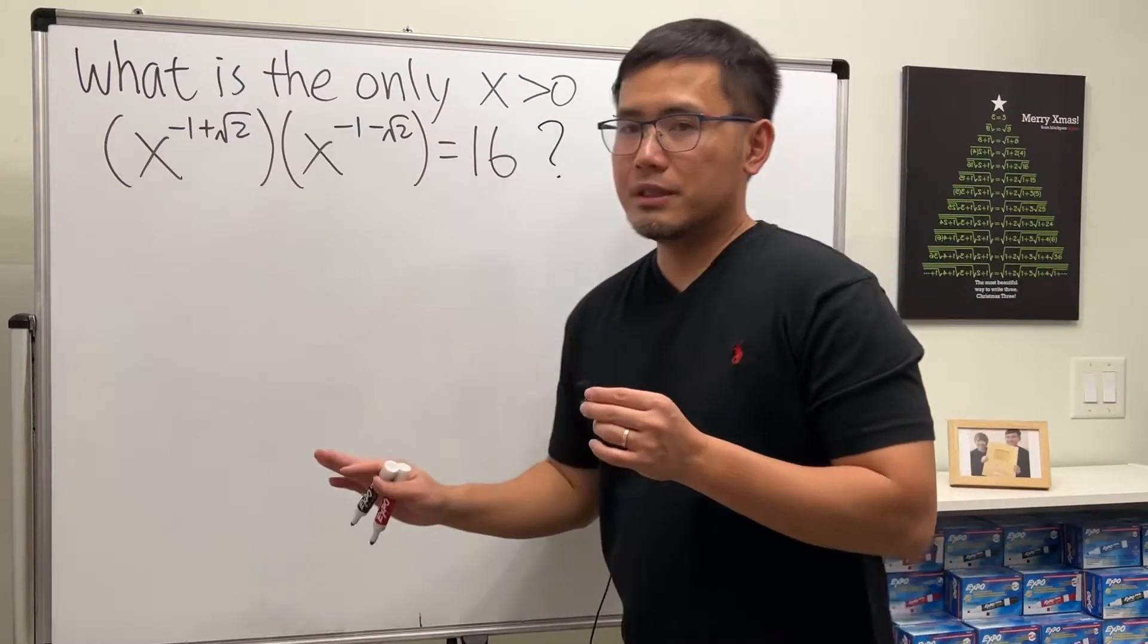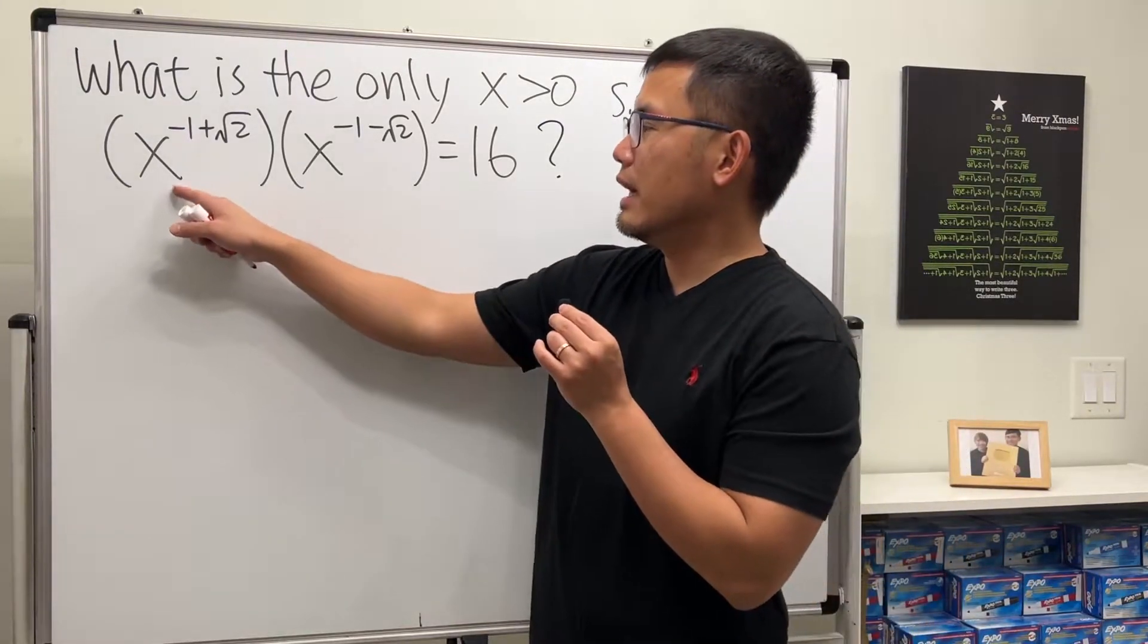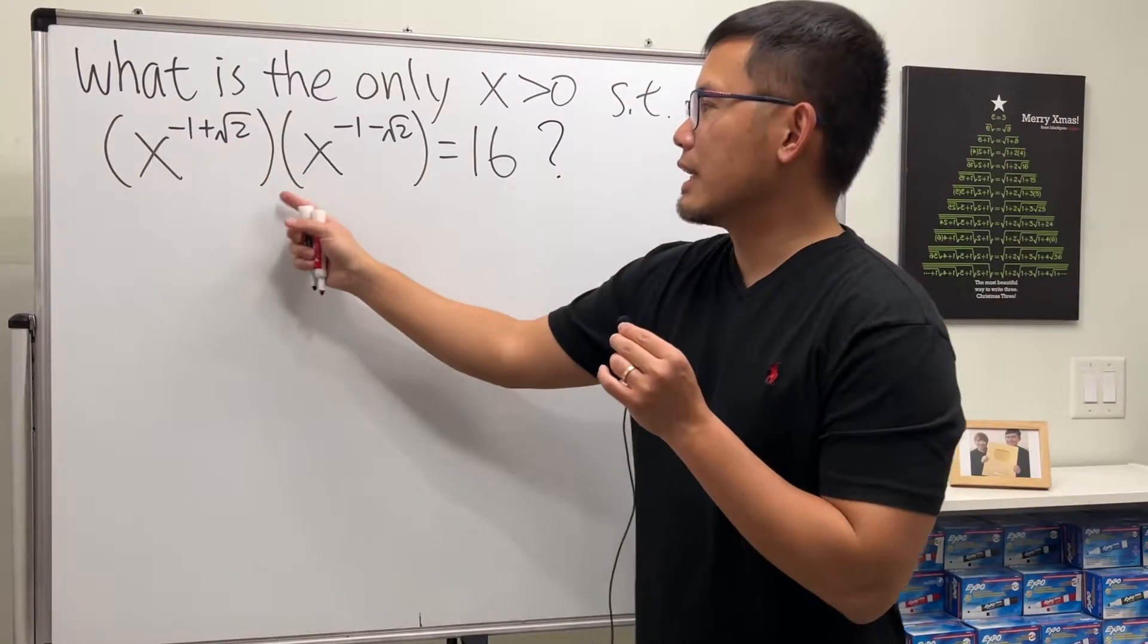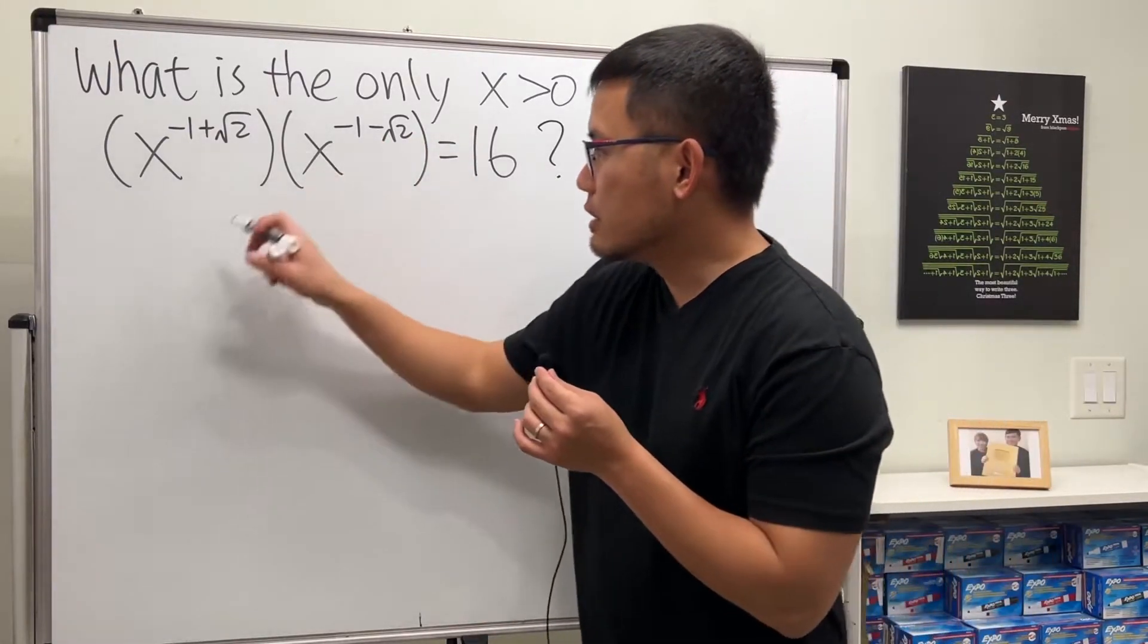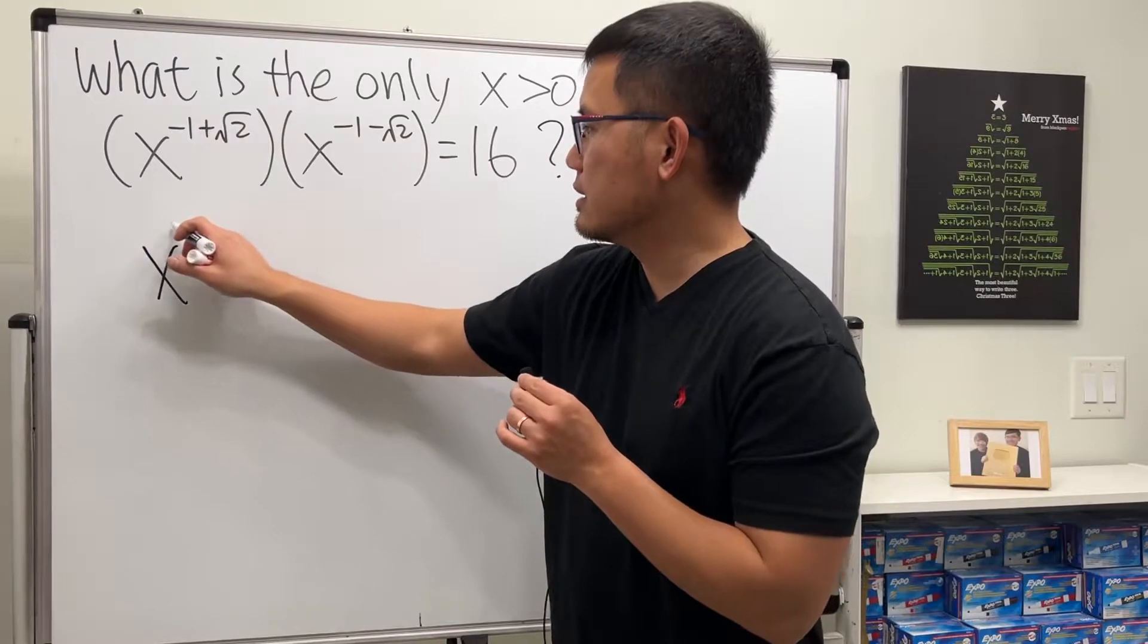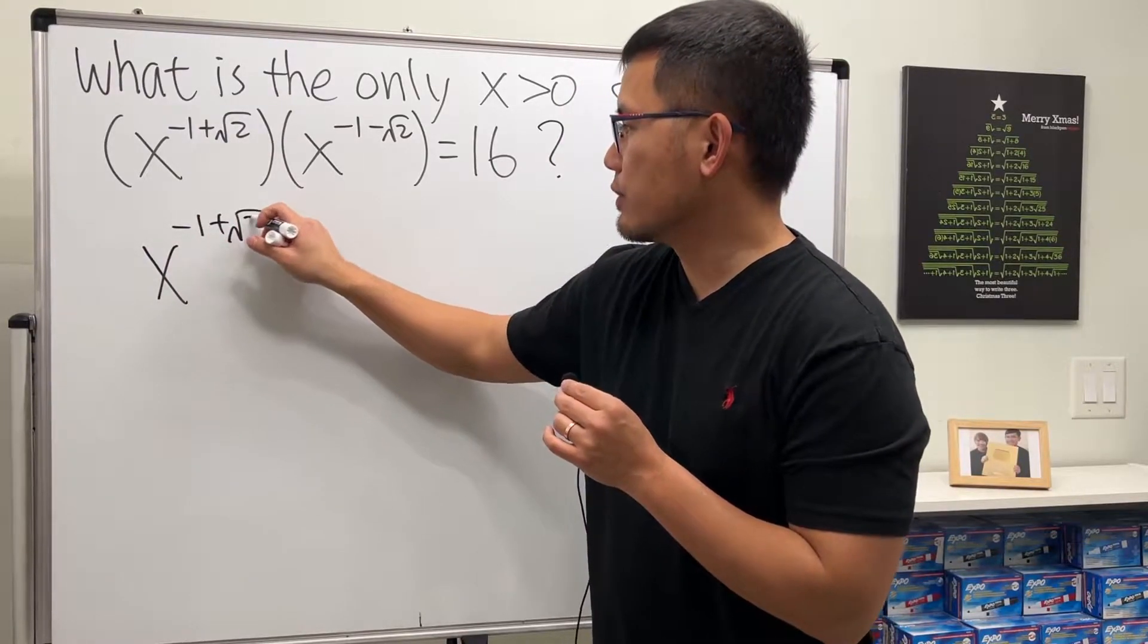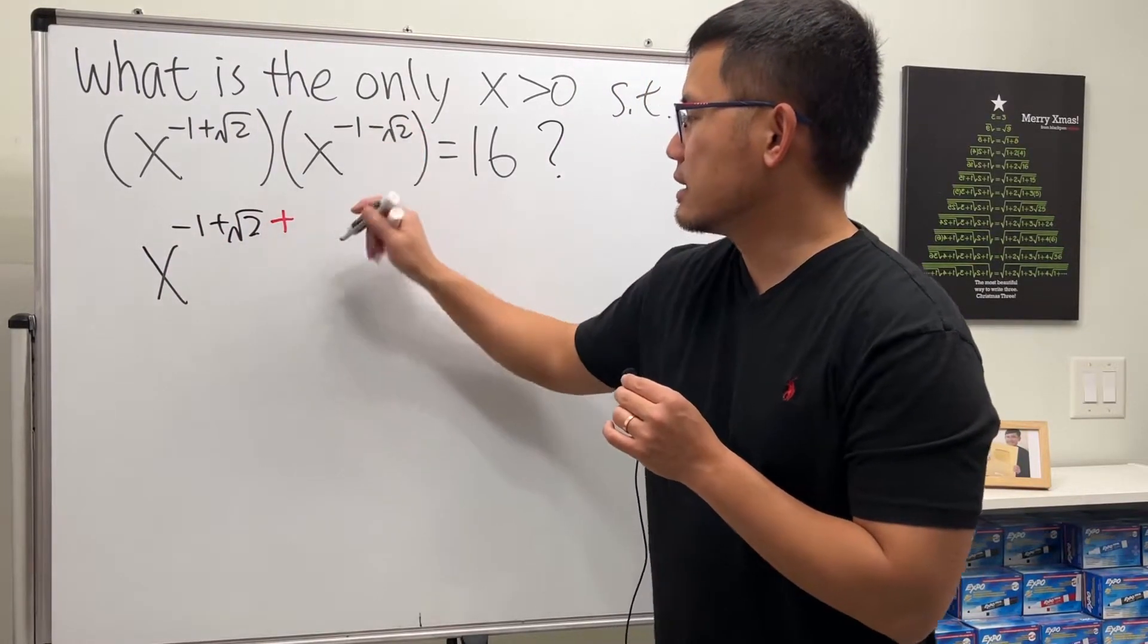This right here seems not bad because we have x to this power times x to that power. What we do is just add the exponents first, so this is x raised to negative one plus square root of two, and then we add the second power which is negative one minus square root of two.